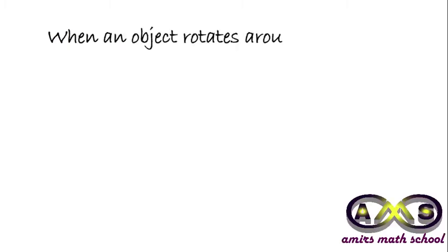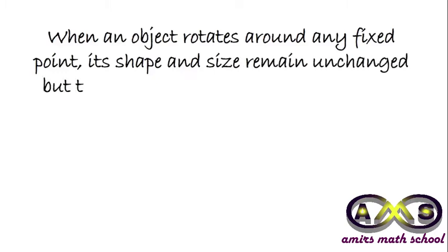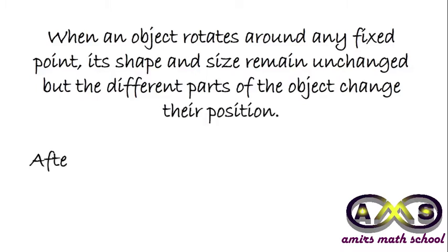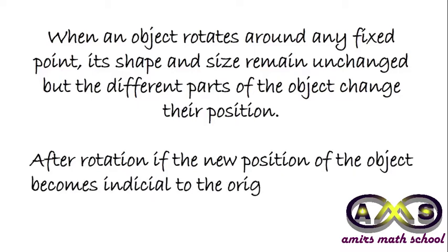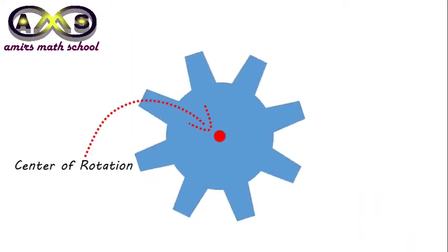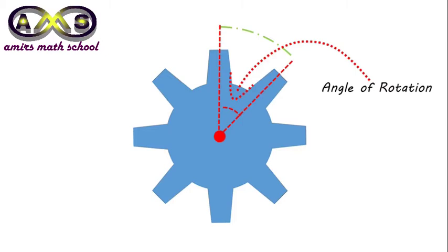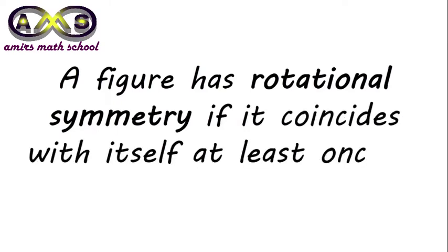When an object rotates around any fixed point, its shape and size remains unchanged, but different parts of the object change their position. After rotation, if the new position of the object becomes identical with the original position, then the object has rotational symmetry. A figure has rotational symmetry if it coincides with itself at least once in a rotation less than 360 degrees. Important factors for rotational symmetry are the center of rotation and the angle of rotation.